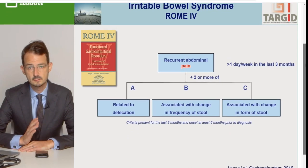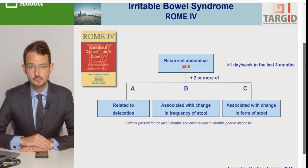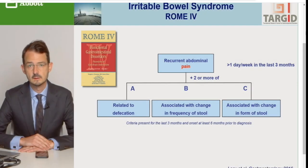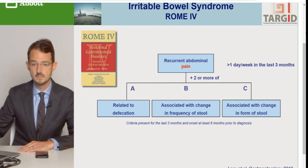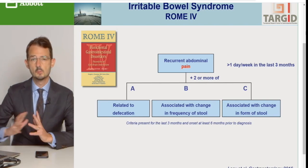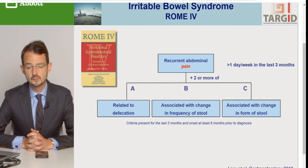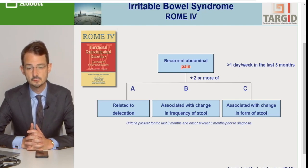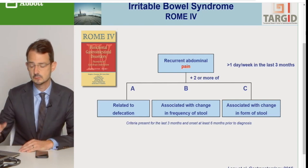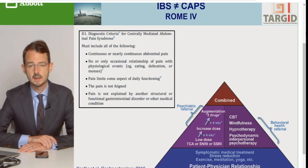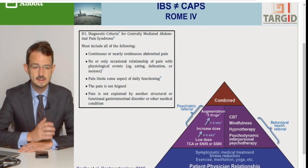Cần có thêm 2 trong 3 các tiêu chí phụ cộng với đau bụng là tiêu chí chính. Đối với tần suất, ít nhất mỗi tuần phải có một ngày bị như vậy, và khởi phát là trước đó 6 tháng. Đó là tiêu chí của Rome được sử dụng trong nghiên cứu, nhưng cũng được sử dụng trong thực hành lâm sàng. Mối liên quan đối với các tiêu chí của phân là quan trọng để phân biệt IBS từ những trường hợp mà khó điều trị, thí dụ như những đau bụng liên quan tới hệ thần kinh trung ương - CAPS.